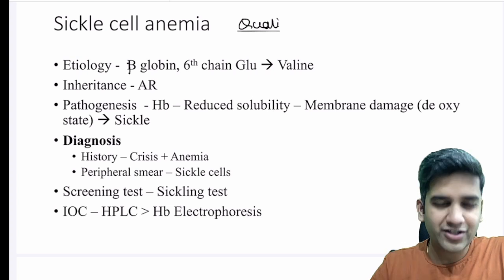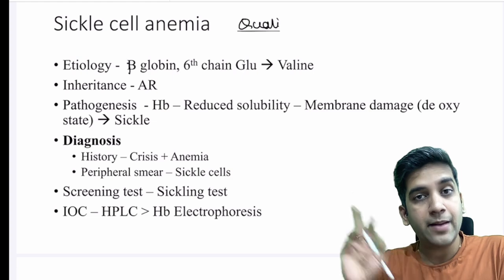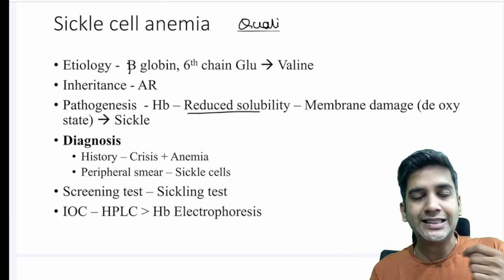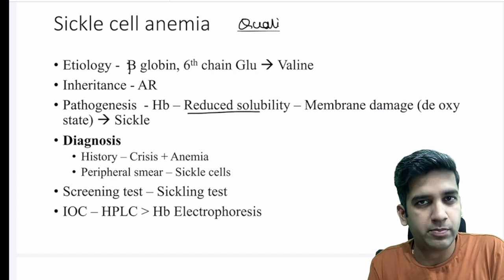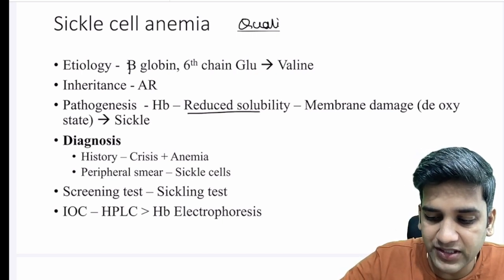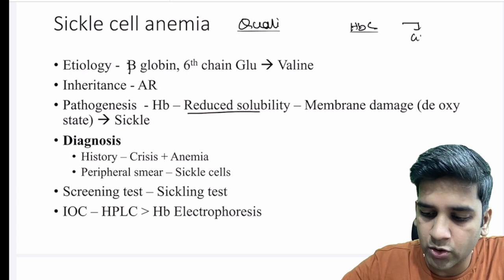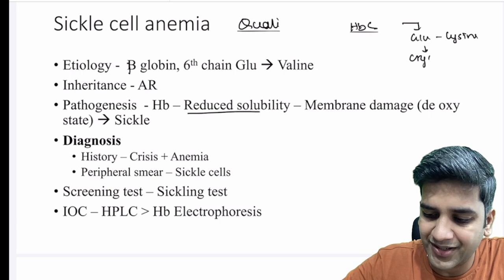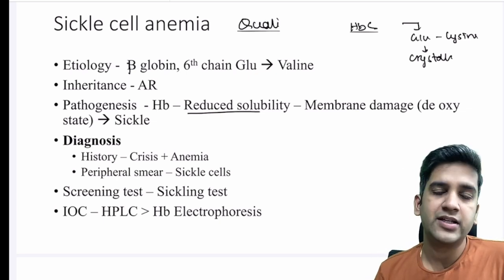The etiology — most of you will remember this from school. In the beta globin chain of hemoglobin, the sixth position glutamic acid becomes valine. Because of this substitution, the solubility of hemoglobin is reduced, because valine is a hydrophobic amino acid. In HbC, glutamine becomes lysine, causing the hemoglobin to form crystals. So crystallization is the problem in HbC, and reduced solubility is the problem in sickle cell anemia.